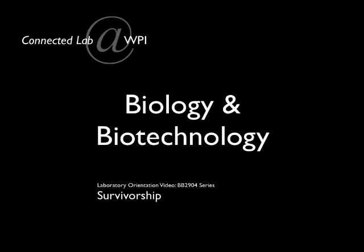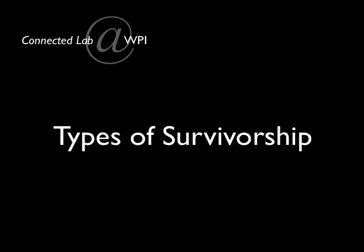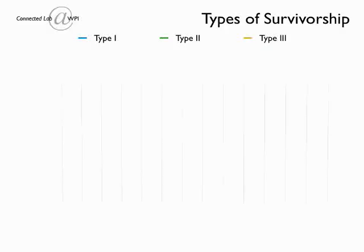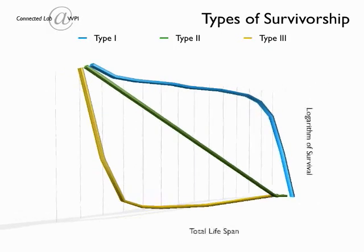Welcome to Connected Lab at WPI video tutorial on Survivorship. Section 1: Types of Survivorship. Survivorship curves visually depict age-specific mortality. Any such curve is obtained by plotting the number of individuals of a particular age group against time. Conventional graphing methods plot the logarithms of survivor number against age. Any such survivorship curve can be classified into at least three types.